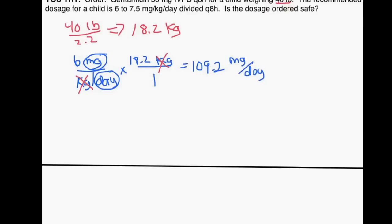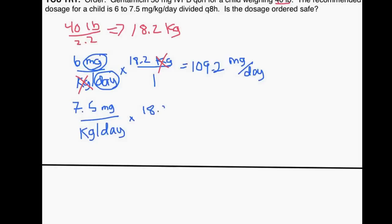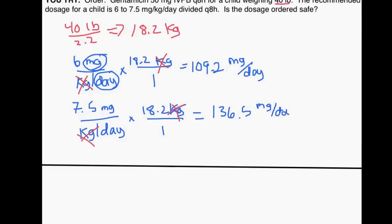Now for the upper bound: 7.5 milligrams per kilogram per day. I get rid of the per kilogram by multiplying by our patient's weight of 18.2 kilograms. The kilograms cancel using dimensional analysis. Seven point five times 18.2 gives 136.5 milligrams per day. So a patient weighing 40 pounds should receive between 109.2 and 136.5 milligrams per day.